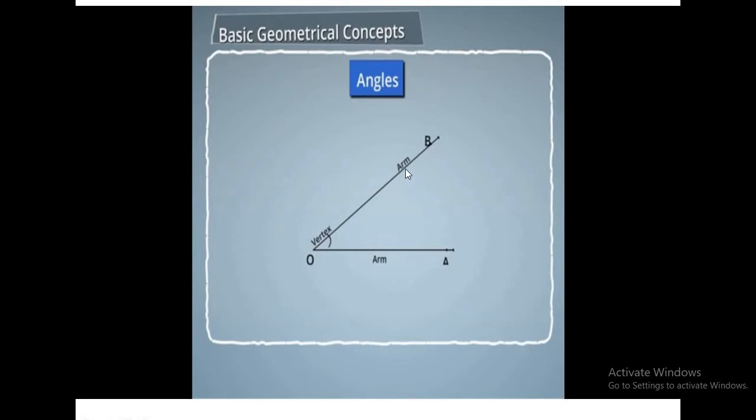As you know, an angle has two sides and one vertex. So you can name any angle by two ways.